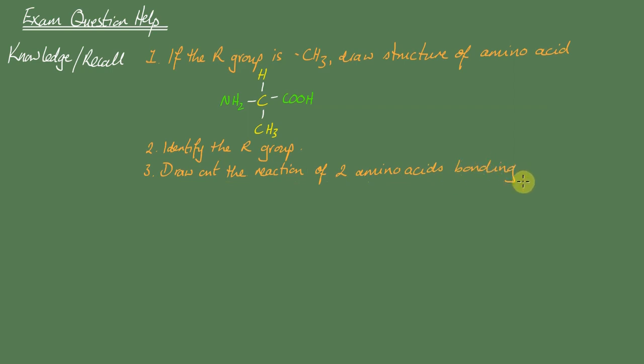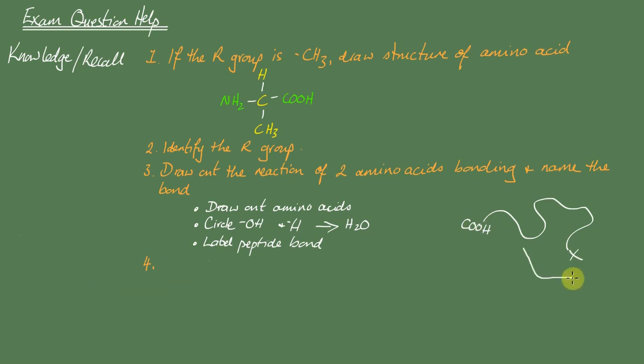Number three, draw out the reaction of two amino acids bonding and name the bond. So you need to draw out those two amino acids. Remember you start with that central carbon, and you remember that the acid group has got a carbon in it, COOH. Draw them out next to each other, and remember to circle the OH group from the acid and an H from the amine to make your water, and label the peptide bond between the CO of the remainder of the carboxylic acid group and the NH of the amine group.